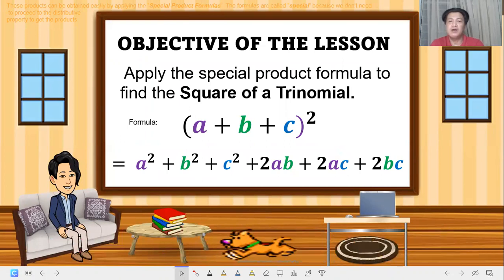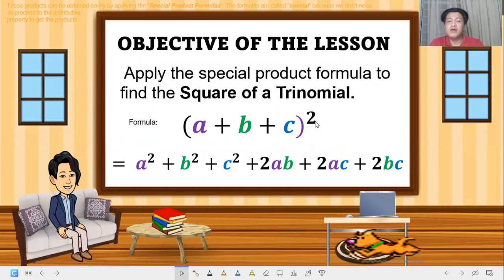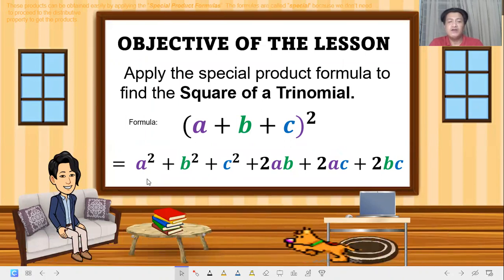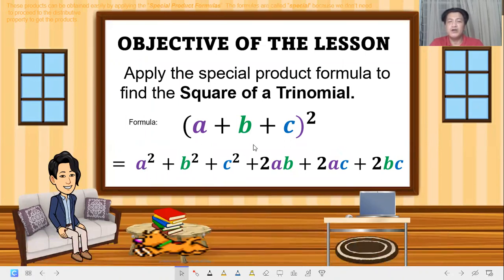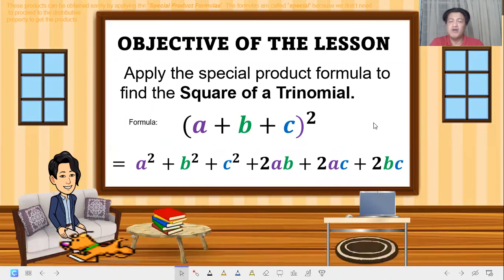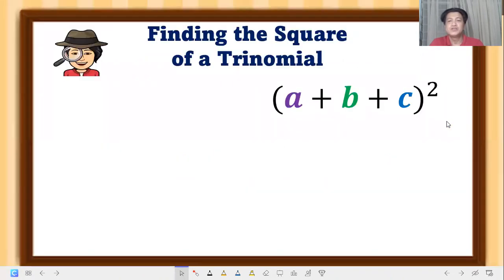Our objective of the lesson is to apply the special product formula to find the square of a trinomial. When the exponent is 2, we have (a + b + c) squared. When we expand this, we have the formula or pattern: a squared plus b squared plus c squared plus 2ab plus 2ac plus 2bc.